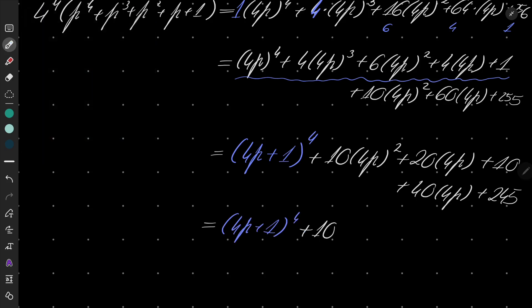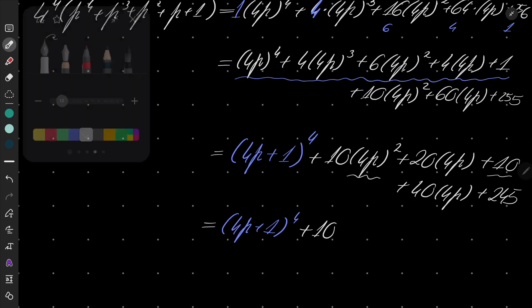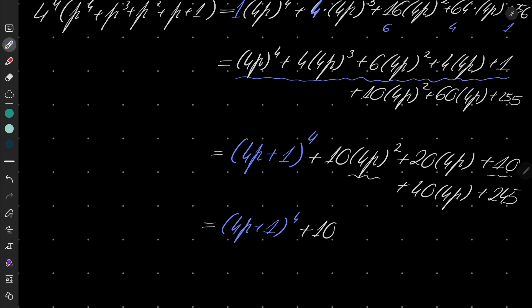If I factor out 10, I will have something squared plus 2 times something plus 1 times 1 plus 1 squared. So this part will become 4p plus 1 squared.